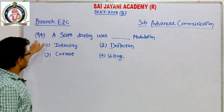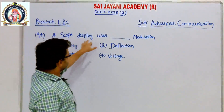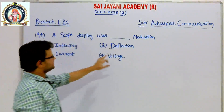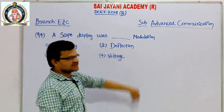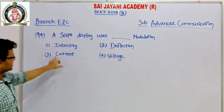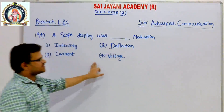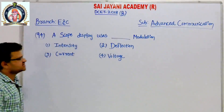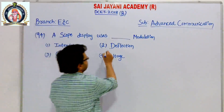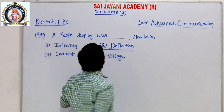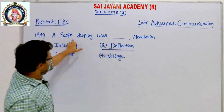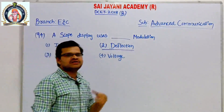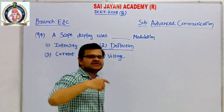Question number 94: A-scope display uses dash modulation. The options are: intensity, inflection, current, and voltage. The answer for this question is deflection, because A-scope display is the most popular type of deflection modulation type display system.